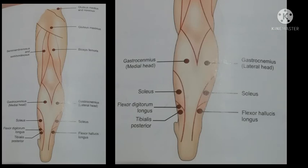Now to stimulate the muscles of the back of the leg, the inactive electrode is placed on the popliteal fossa because the tibial nerve passes from there. To stimulate the lateral head of gastrocnemius, the pan electrode should be on the lateral side of the popliteal fossa. To stimulate the medial head of gastrocnemius, the pan electrode should be on the medial side of the popliteal fossa.